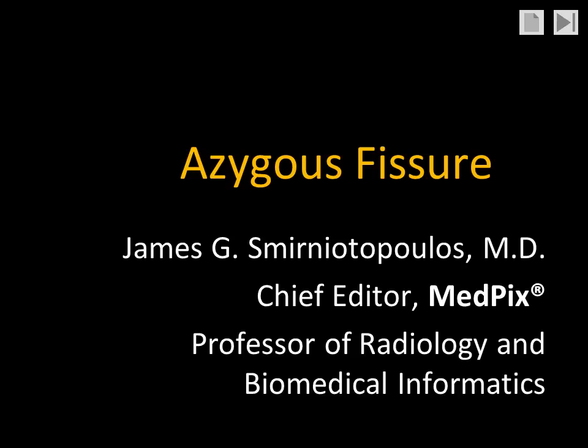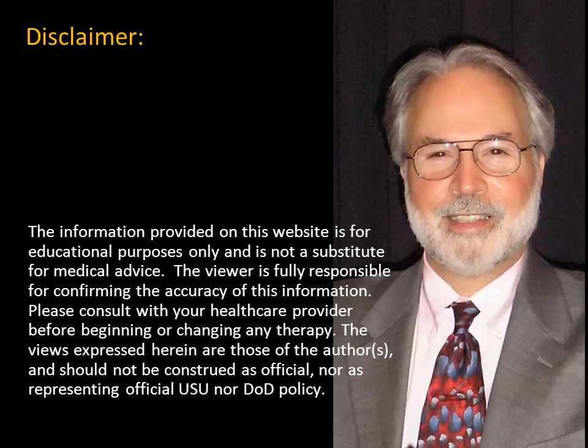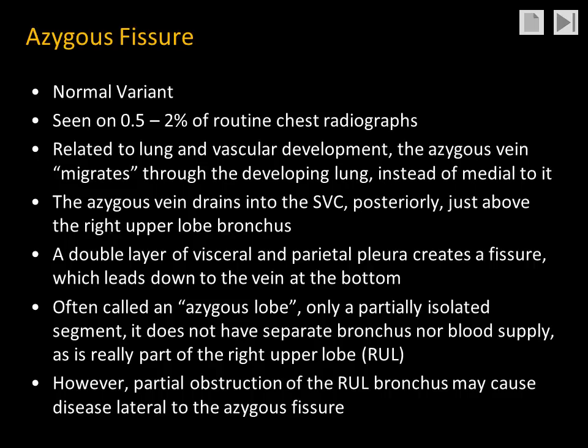Hi, I'm Jim Smyrniatopoulos, and today we're going to talk about the azygous fissure, also sometimes called the azygous lobe. We have no significant financial disclosures. The azygous fissure is a normal anatomic variant. It's seen on approximately one-half to two percent of routine chest radiographs.